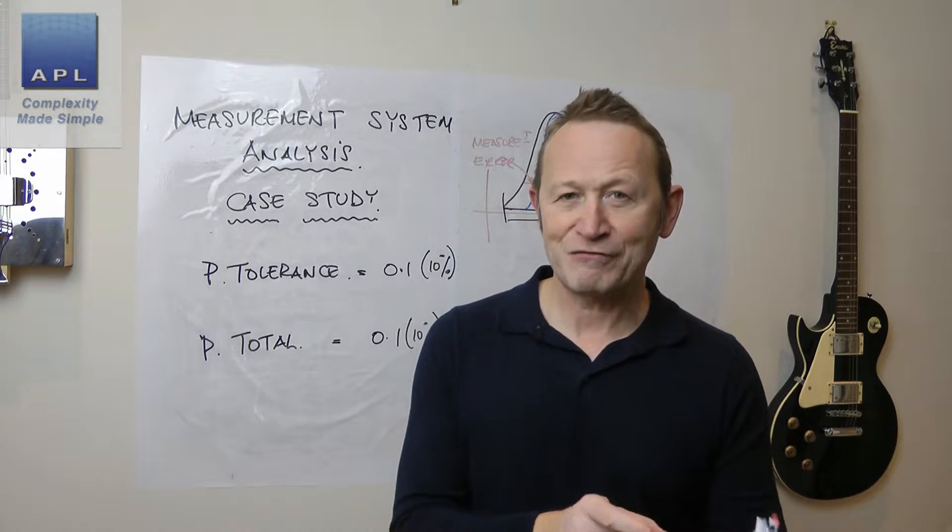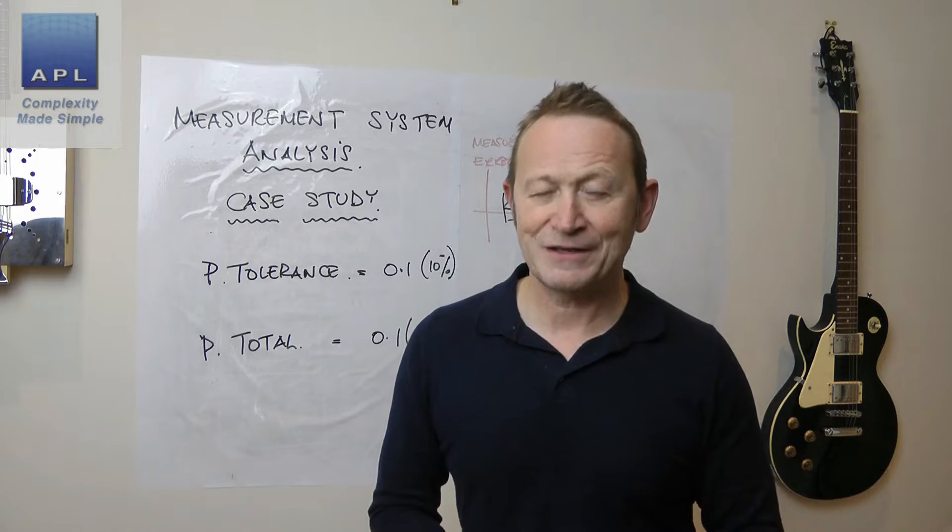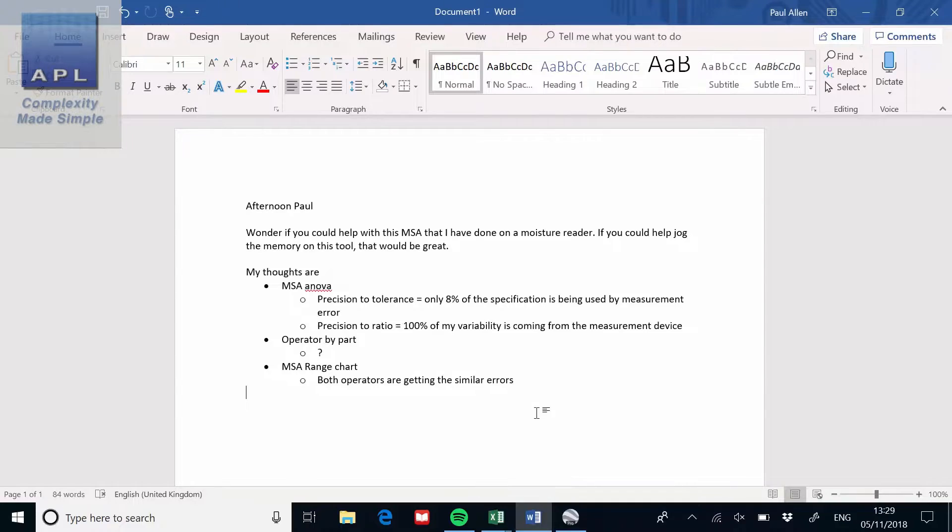So let's go back and have a look at the results that he's getting that he sent me in the email. So as you can see, what he's saying is his precision to tolerance is 8%, which is great. That's perfectly acceptable. But his precision to total, he's missed a word out there, but his precision to total is a hundred percent. So a hundred percent of all the variability he's seeing seems to be coming from his measurement system, which would tell him that he has a problem.